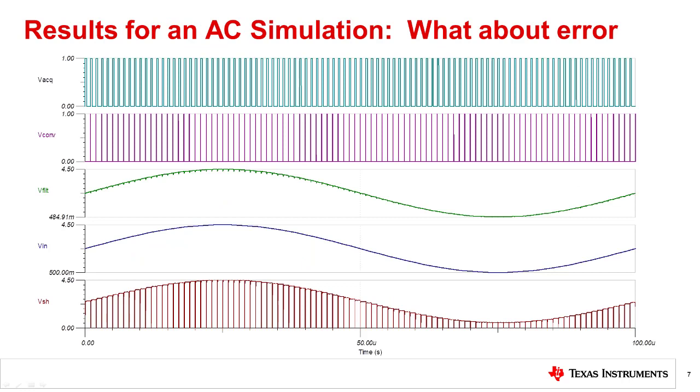This graph shows the results for an AC simulation for the previous circuit. You can see many acquisition periods, and the sample and hold circuit tracks the input signal for each acquisition period. You can also see charge kickback spikes on the filter output voltage. The one thing that we don't show here is the error signal. In the next slide, we will zoom in on these signals and see how a phase shift can impact error.